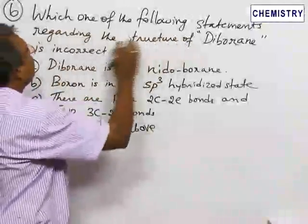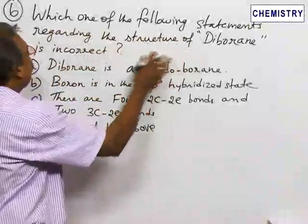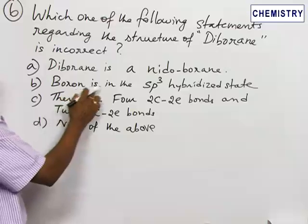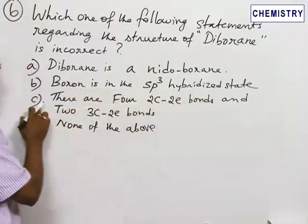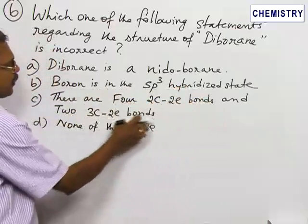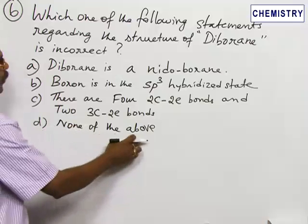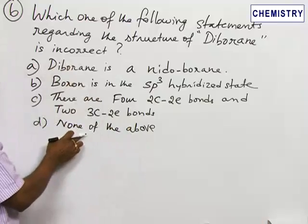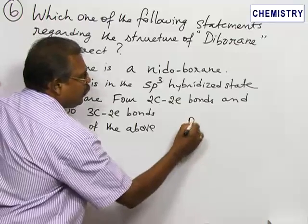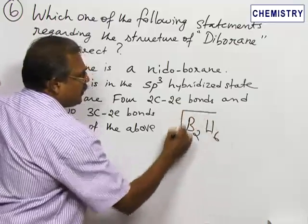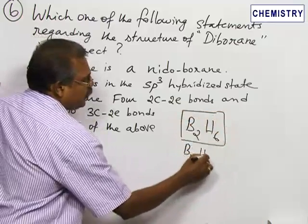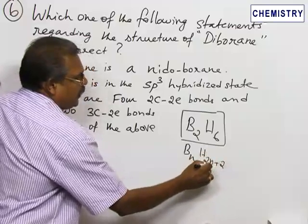Question 6: Which of the following statements regarding the structure of diborane is incorrect? Option A: diborane is a nido borane. Option B: boron is in the sp³ hybrid state. Option C: there are four two-center two-electron bonds and two three-center two-electron bonds. Option D: none of the above. Boron forms diborane with the formula B₂H₆, which is in the format BₙH₂ₙ₊₂.